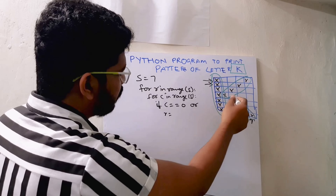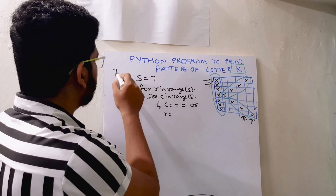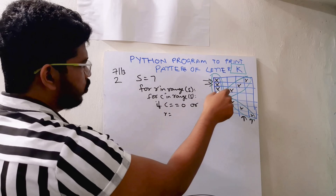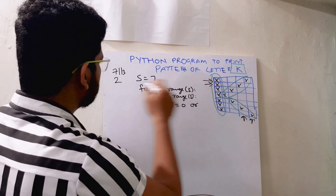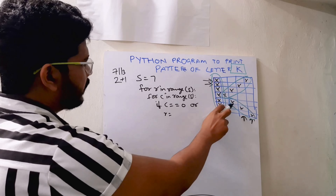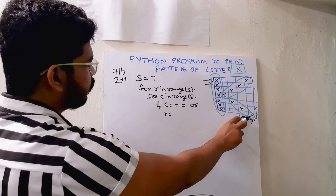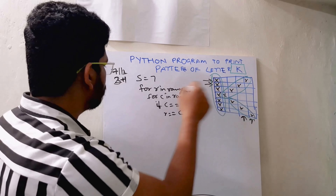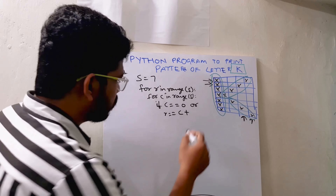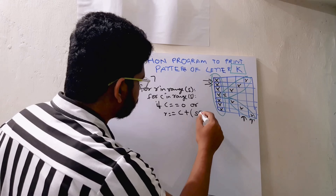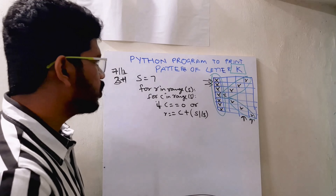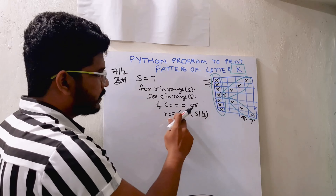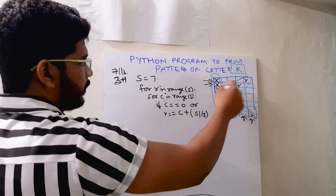I'll do size divided by three (s // 3), which approximately gives 2. Then I'll add plus one and do column plus s // 3. So first time it will print at position 3, next iteration goes to 4, and then to 5. This gives us the diagonal going downward. The condition is: row equals c plus s // 3, for the upper diagonal of the K pattern.